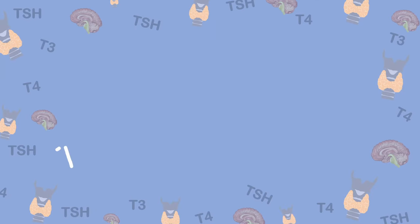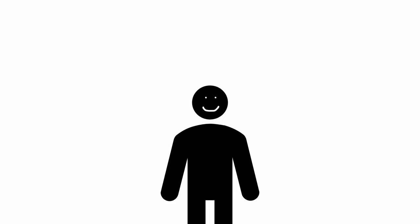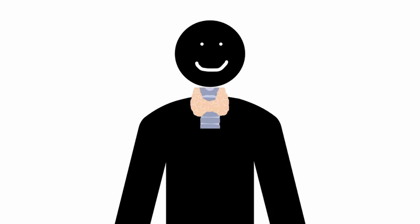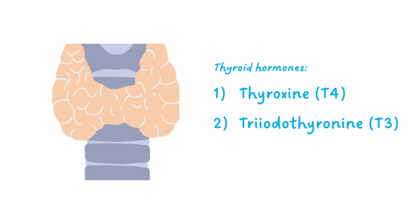Welcome to this video on interpreting the thyroid function blood test. The thyroid gland sits at the front of the neck, made of two lobes. Its function is to produce three hormones that regulate our metabolic rate and calcium levels in the blood.